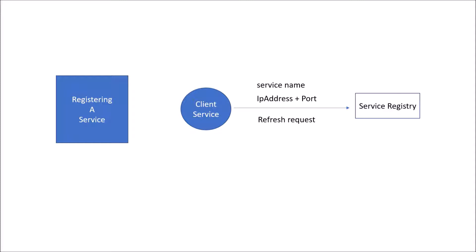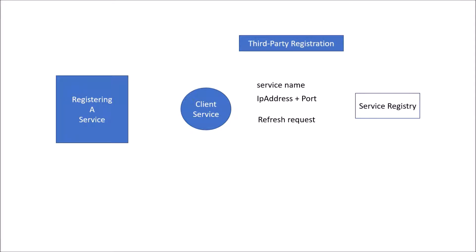Service registration can be done in two ways: self-registration or third-party registration. In self-registration, the client service directly requests the service registry with its service name, IP address, and port. In third-party registration, a third party acts as a registrar — it monitors the startup and shutdown of services and accordingly registers and deregisters them with the service registry. Open-source registrar projects are a common example of third-party registration.